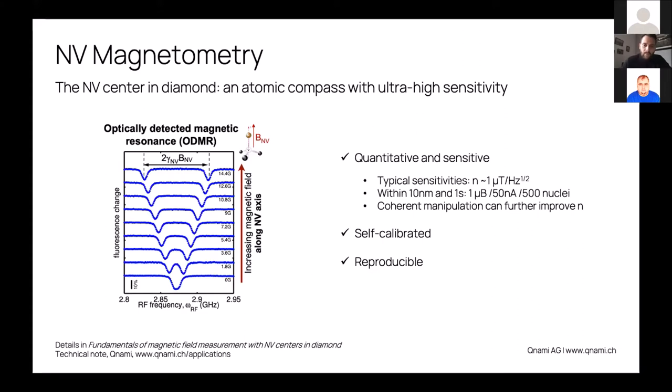It is possible to manipulate that quantum state with a bit more complex sequences—that would be coherent manipulation—and then you can increase the sensitivity, but none of the applications which I'm going to present today uses that actually. The other very nice feature which come with this type of sensor is that they are self-calibrated and reproducible. The measurement of the magnetic field only depends on a constant, and that constant is just the same for one NV center and the next one.